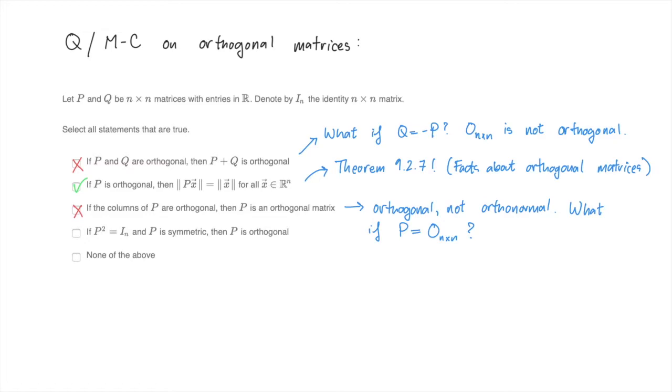Lastly, the fourth one. We suppose that P squared is the identity, and that P is symmetric. Is it true that P is orthogonal in this case? The answer here is yes. If P is symmetric, then since P squared is the identity, we get P transpose times P is the identity, which means that P is invertible, and that P inverse is equal to P transpose. This is actually the very definition of an orthogonal matrix, so this statement is true. And for good measure, we'll check off the none-of-the-above response too.